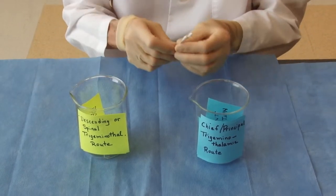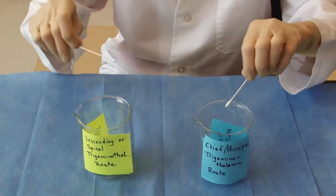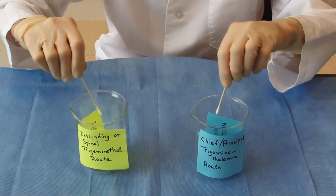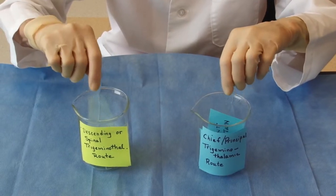Now, light touch, just like from the body, is carried in both of these pathways. So light touch will tell you that something's working in the trigeminal, but it doesn't distinguish between these two pathways.